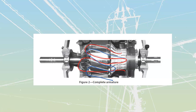So that's our armature. You can see that the shaft supports the armature across the bearings inside the end bells, and there's another component we're going to look at in a second called the commutator.